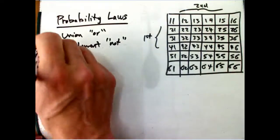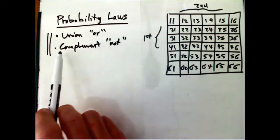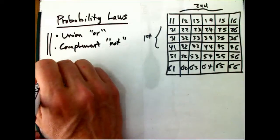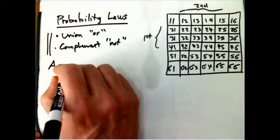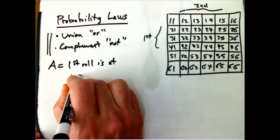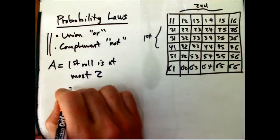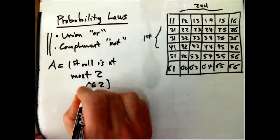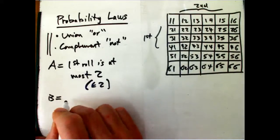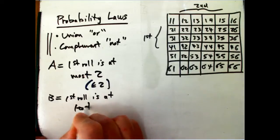First, in this video, we're going to focus on the union of two events, which corresponds to logical OR, and the complement, which corresponds to logical operation NOT. So first, let's say event A is the first roll is at most two — and that's inclusive, I mean less than or equal to two. And event B is the first roll is at least five.